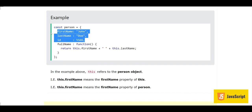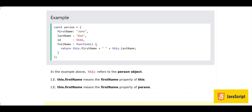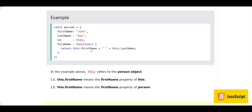Keep this in mind: a method is always a function stored as a property. In this example we have the object with familiar properties firstName, lastName, and id. Then the property 'fullName' is something new — after the colon we have the function keyword with curly brackets, and a return statement with 'this.firstName' and 'this.lastName'. This function will return the concatenated first name and last name. The 'this' keyword here refers to the person object.